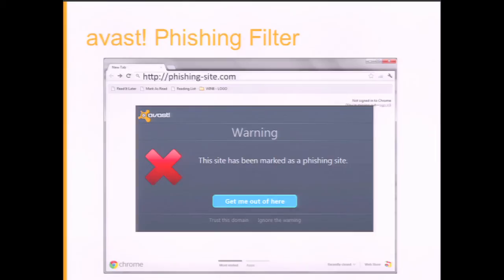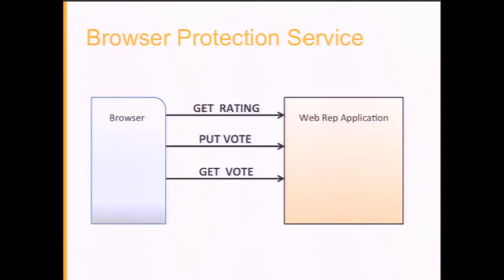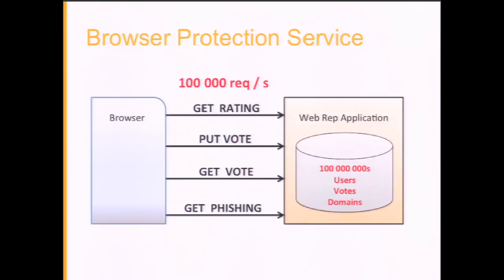What's behind the curtain? The browser sends requests to the web reputation application in the backend — get rating for the reputation of a website, send votes from the user, get votes already submitted, and get the phishing status of a domain. The key thing to emphasize is that we are answering 100,000 requests per second. With 160 million users the load is huge, and in the database we have 100 million records. The web service requires serious tuning and must perform really, really well.